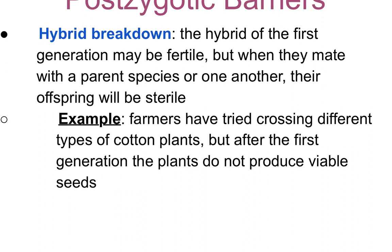A hybrid breakdown is when the hybrid of the first generation could potentially be fertile, but when they mate with a parent species or another initial hybrid, their offspring will be sterile. This occurs a lot in plants — farmers have tried crossing different types of cotton plants, but after the first generation the F1 population is viable, yet any generation after that is sterile, unreproductive, or doesn't sprout. This is called hybrid breakdown.